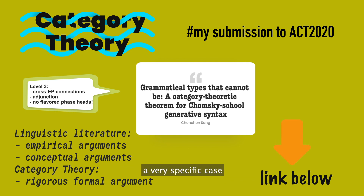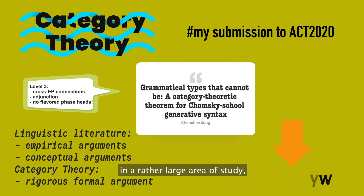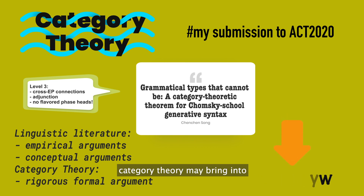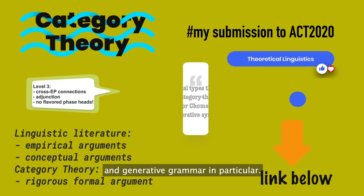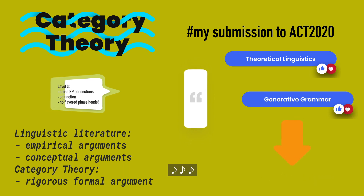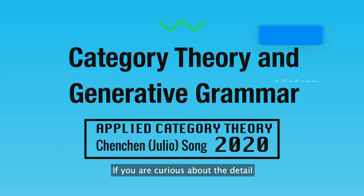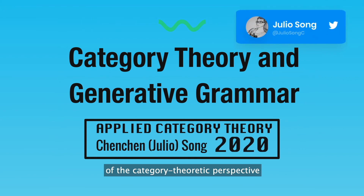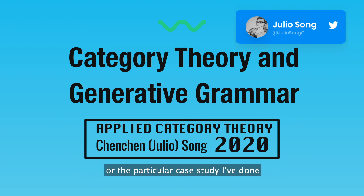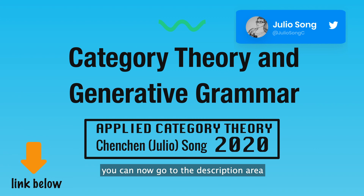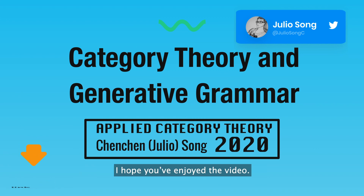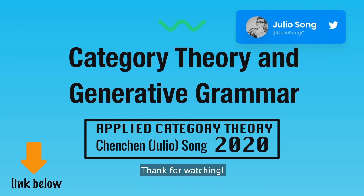While this is only a very specific case in a rather large area of study, it demonstrates the kind of interesting and valuable insights category theory may bring into theoretical linguistics in general, and generative grammar in particular. This is the end of my video. If you are curious about the detail of the category theoretic perspective on the human language grammatical type system, or the particular case study I've done about impossible grammatical types, you can go to the description area and click the links there. I hope you've enjoyed the video. Thanks for watching.